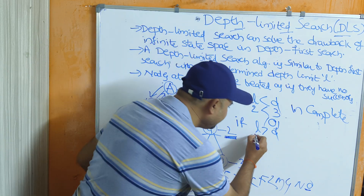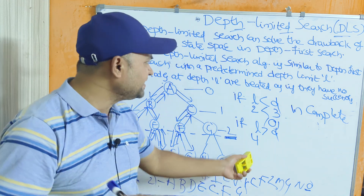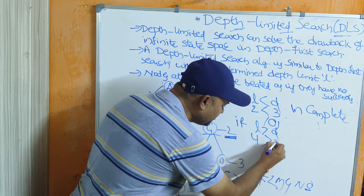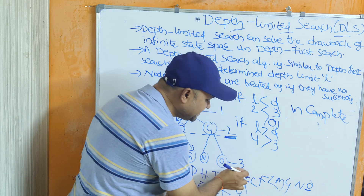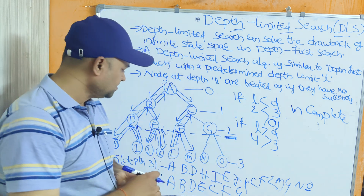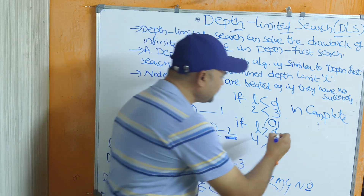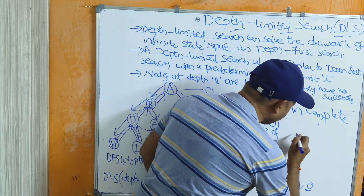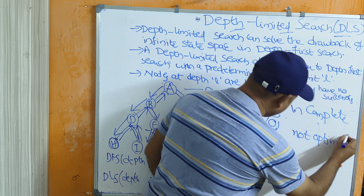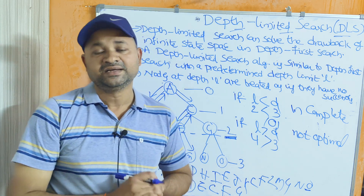Second, if L is greater than D: suppose the limit is set to 4 but the depth of the tree is only 3. At the 4th level there are no children, so the algorithm is not optimal — it will not give the best solution. If L is greater than D, DLS is not optimal.